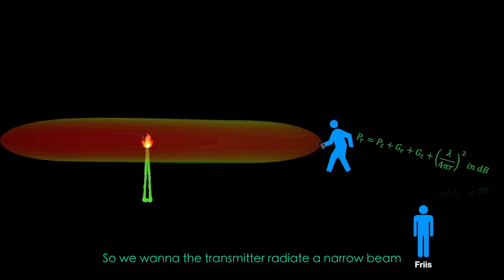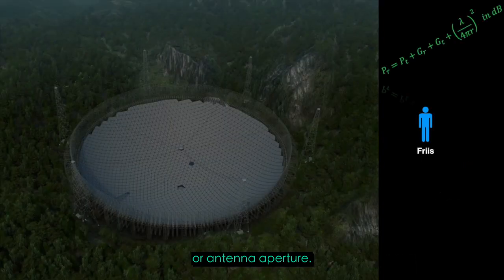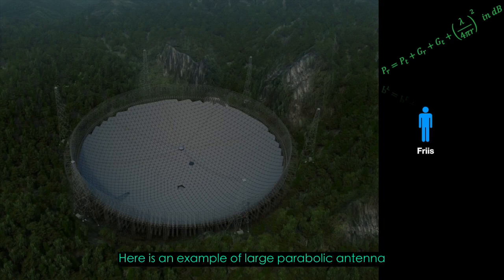So we want the transmitter to radiate a narrow beam pointing to the receiver instead of omnidirectional. We can accomplish this by simply increasing the antenna size or antenna aperture. Here is an example of a large parabolic antenna which receives signals from the universe.